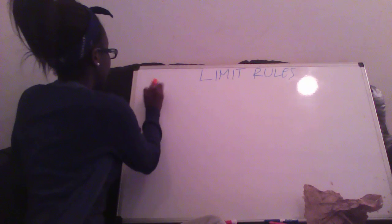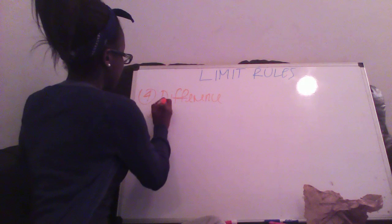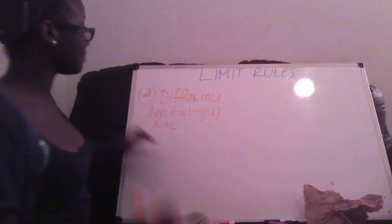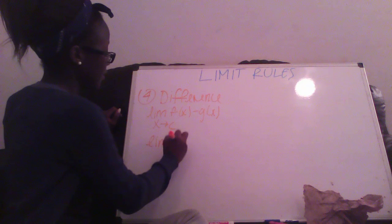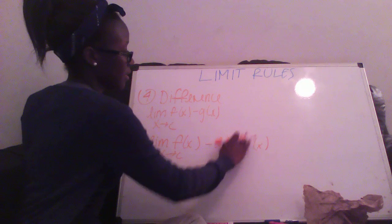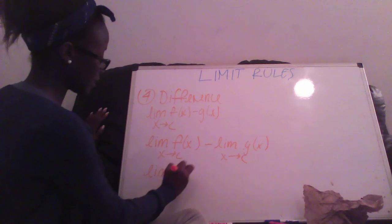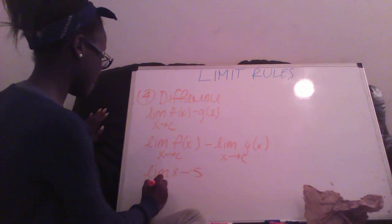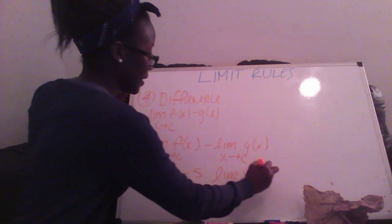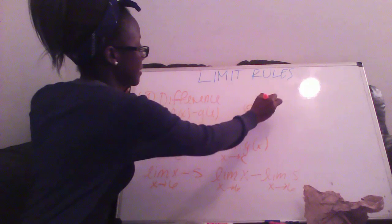The next rule we have is the difference rule. You have the limit of f(x) minus g(x) as x goes towards c. You just break it down like you did the sum rule — limit of f(x) minus limit of g(x). An example is the limit of x minus 5 with x going towards 6. You do limit of x minus limit of 5, ending up with 6 minus 5 which equals 1.